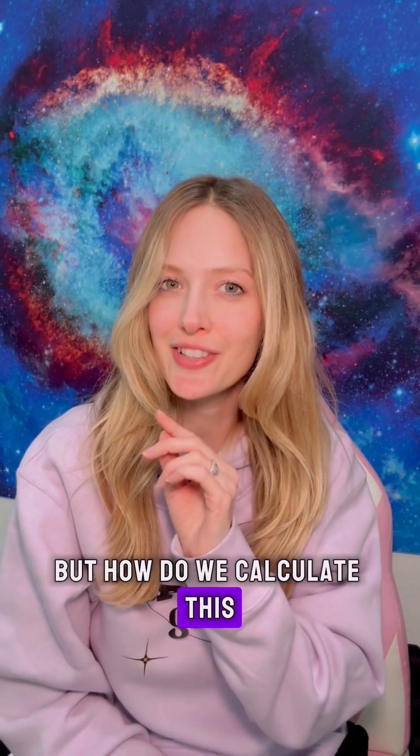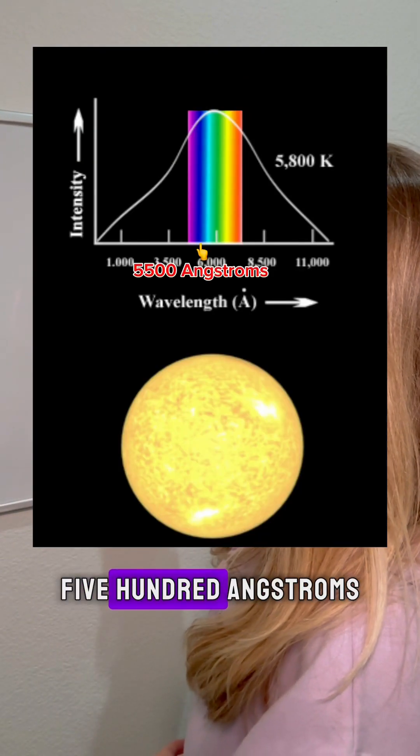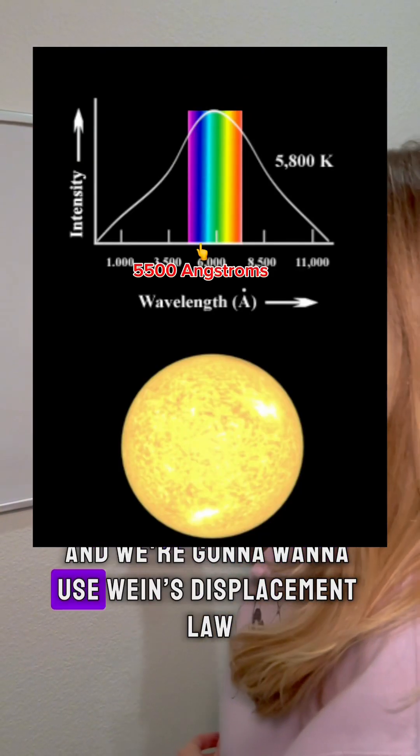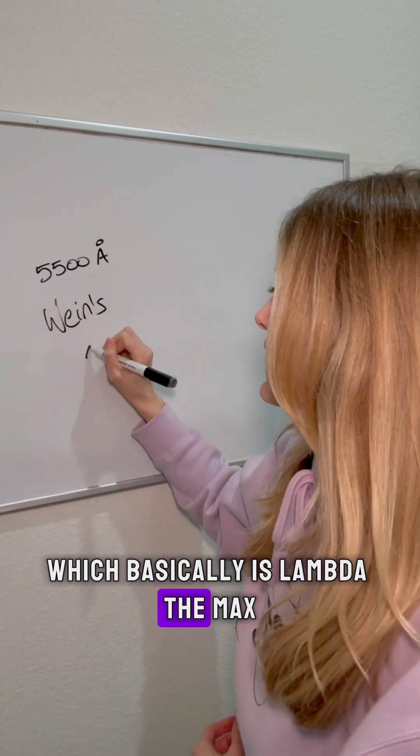But how do we calculate this? Let's take a star that has a peak emission of 5,500 angstroms. Now we're going to want to use Wien's displacement law, which basically is lambda max.